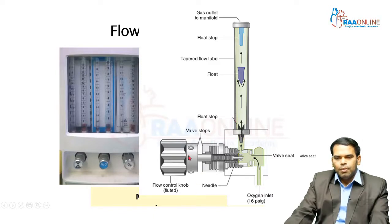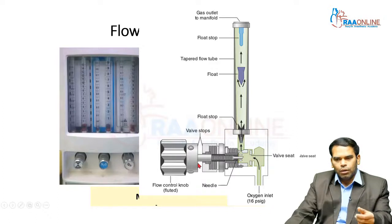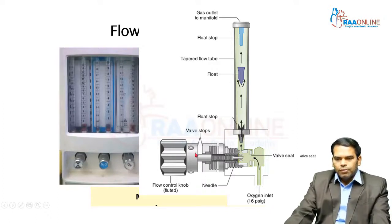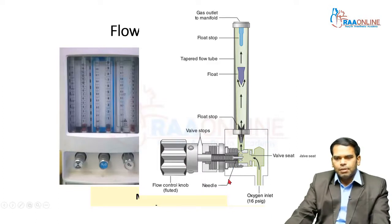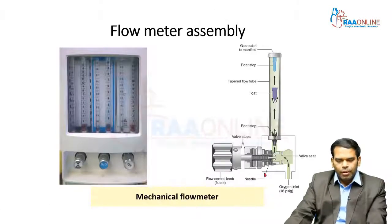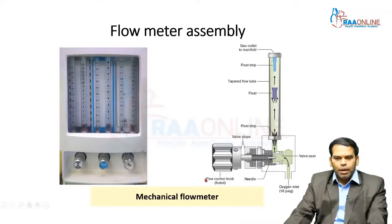The purpose of the valve stop is to prevent damage to the valve seat by the flow control needle when you rotate it anti-clockwise too much. The valve stop also prevents the knob from getting disengaged from the system when rotated anti-clockwise excessively.